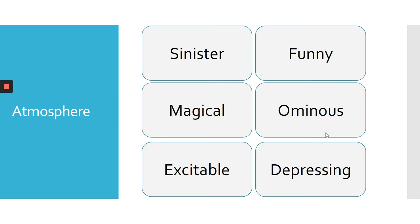Atmosphere is a bit of a strange one because it's difficult to define, but you know an atmosphere when you've read it. For example, when you read a scary story — a horror book — you will feel scared, or tense as the reader. You know that a sinister atmosphere has been created through the word choices that the writer has used.